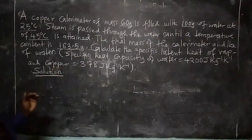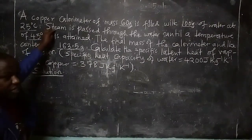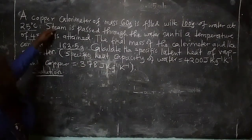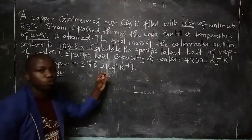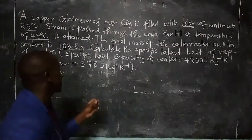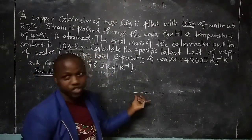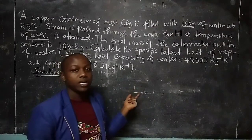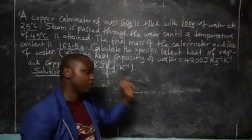This means that part of the steam condenses. When the steam condenses to water it releases what we call latent heat of vaporization. After releasing latent heat of vaporization, the steam will still be at 100 degrees Celsius — a constant temperature.